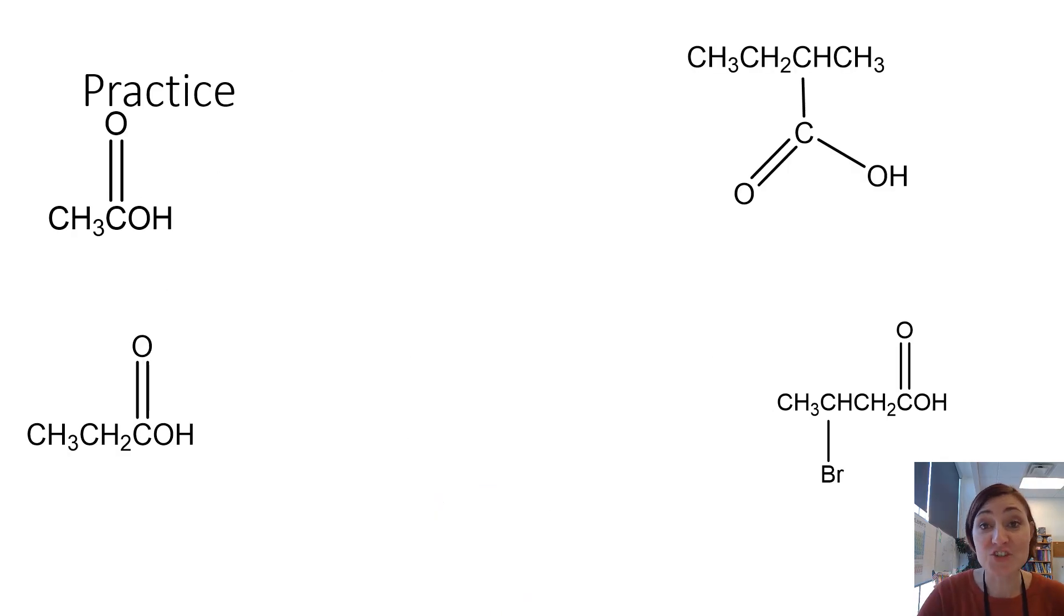Let's jump into some practice. In our first example, we have 1, 2 carbons. So the parent alkane name is ethane. We drop the E, and we replace that with ethanoic acid.